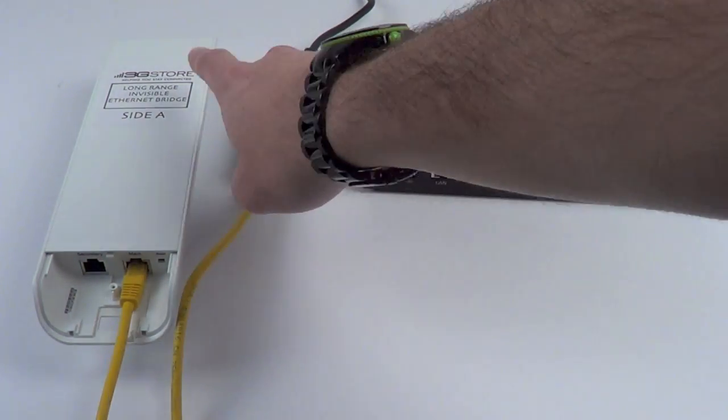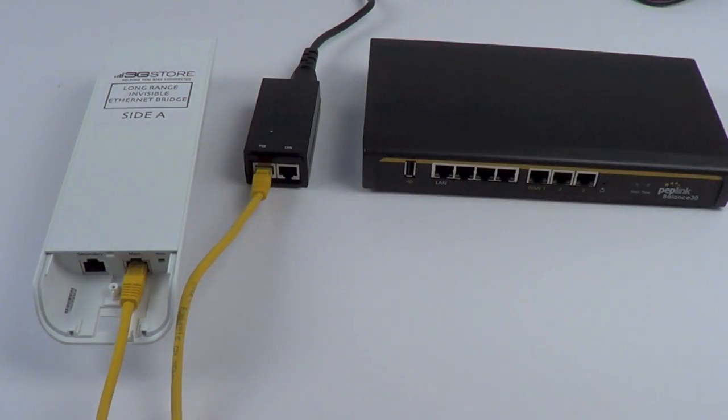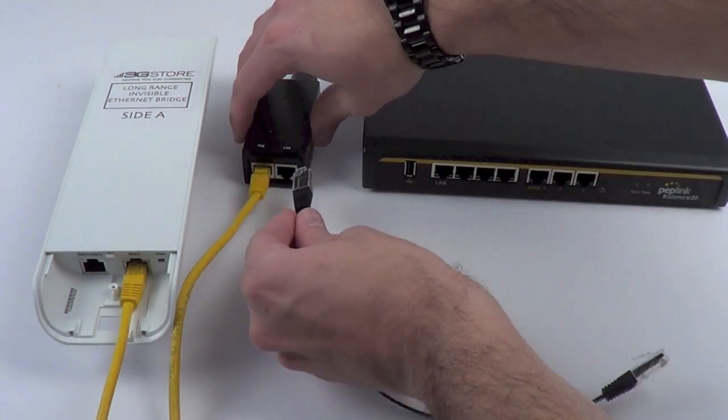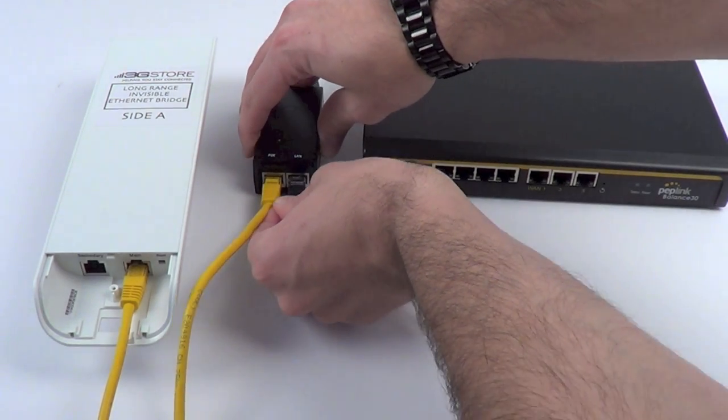Now that our antenna is receiving power from our injector, the second thing we need to do is hook it into our network. Using another Ethernet cable, we'll connect one side to the LAN port of the injector and connect it to the rest of our network.